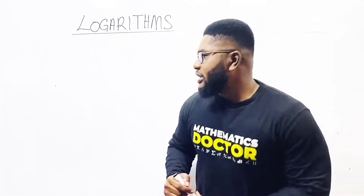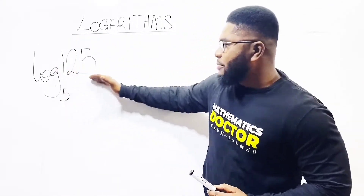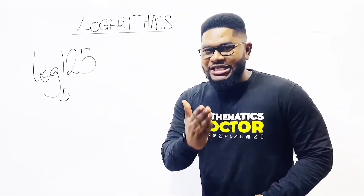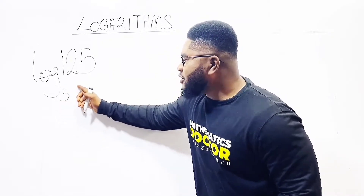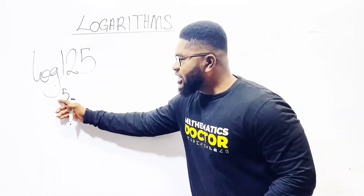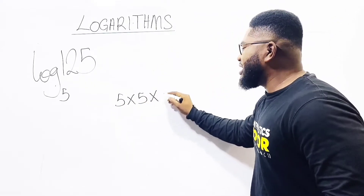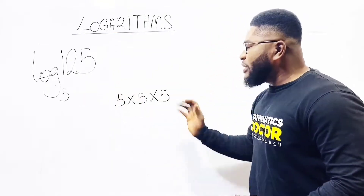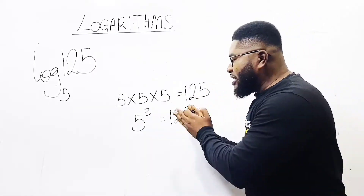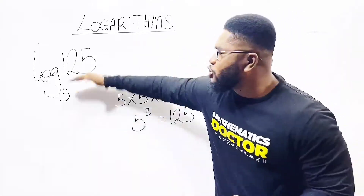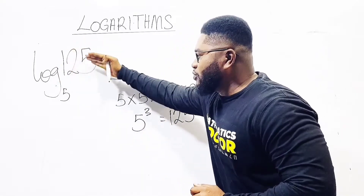Let us take the log of 125 base 5. This is the number and this is the base. To get the final answer, remember the secret — it is the base that actually brings the final answer. Ask yourself: how many times must 5 multiply itself to produce 125? It will be 5 times 5 is 25, times another 5 is 125. So the base 5 must multiply itself 3 times to produce 125. We write this as 5 raised to the power of 3 equals 125. So the final answer of log 125 base 5 is 3.